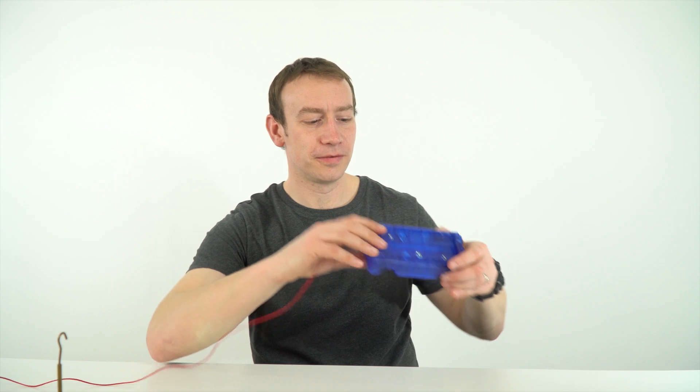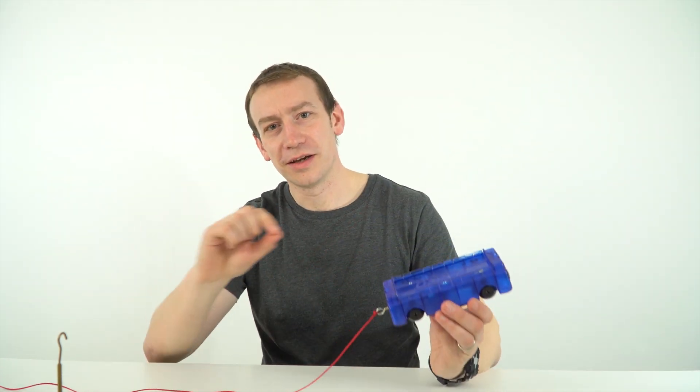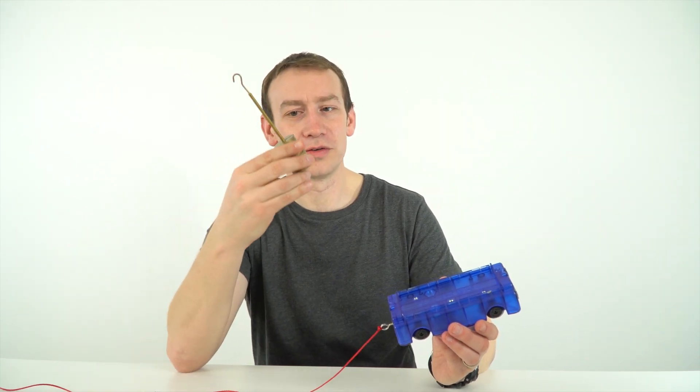In this example we have one of these physics trolleys and there's a piece of string attached to one end. This then goes over a pulley and is attached to a constant weight.